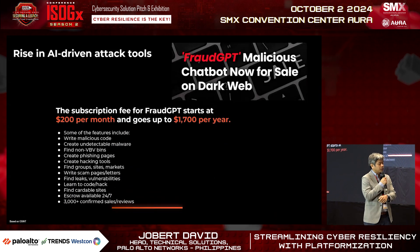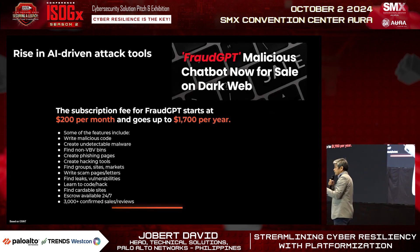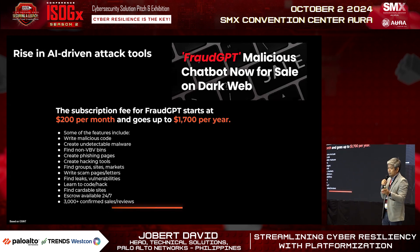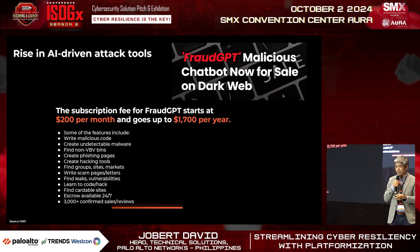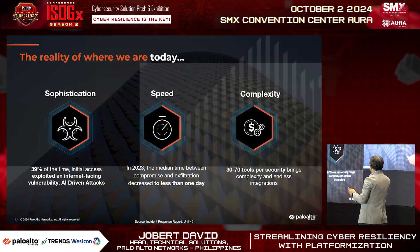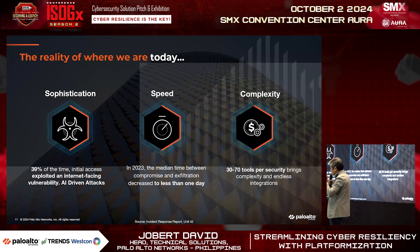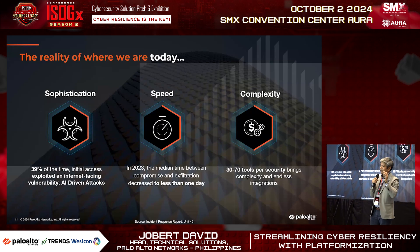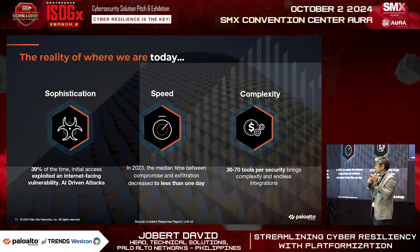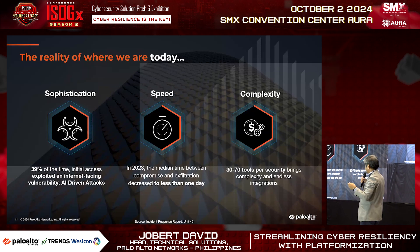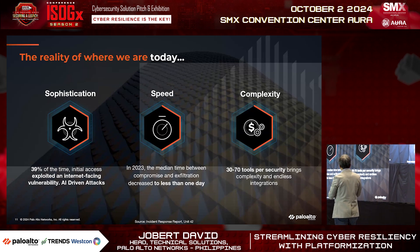Rising AI-driven attack tools like FraudGPT — the dark side of ChatGPT — are now available on the dark web for as little as $200 per month, and you don't need any skill set to use them. In just a matter of time, they can launch an attack at any time. The sophistication and speed of attacks is impeccable, and I feel for the SOC team — they're trying their best to help alleviate attacks, but due to manual processes and tool complexity, it's a significant hardship.